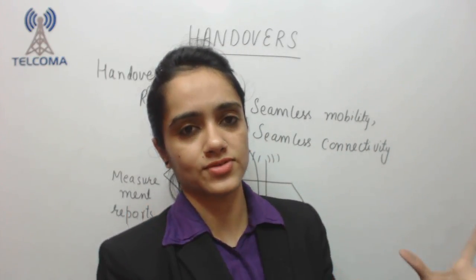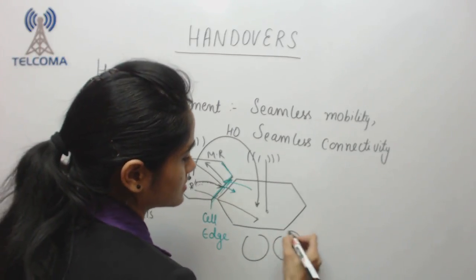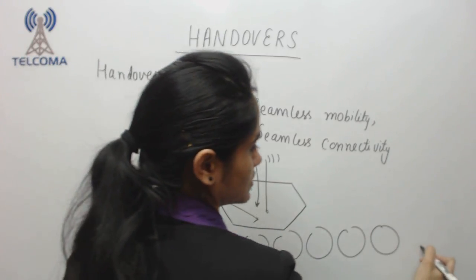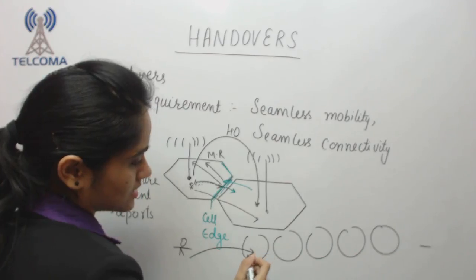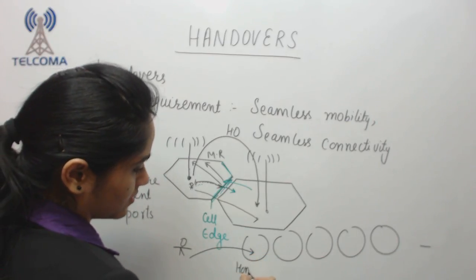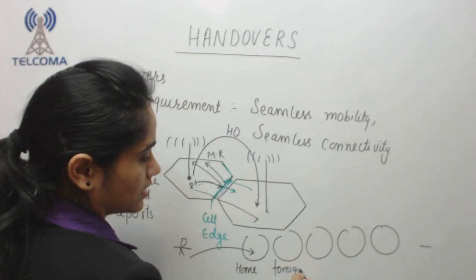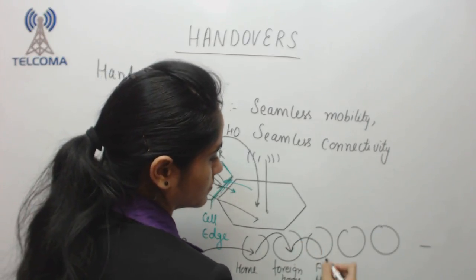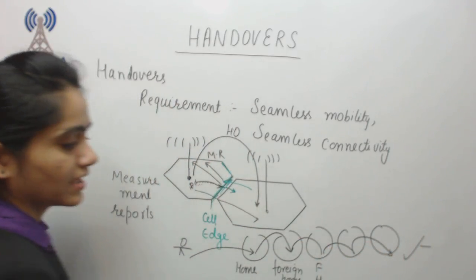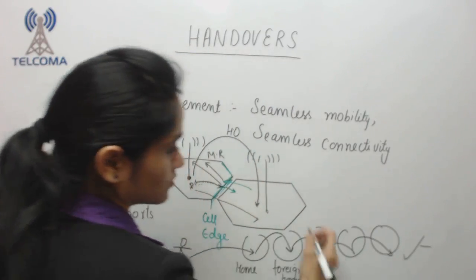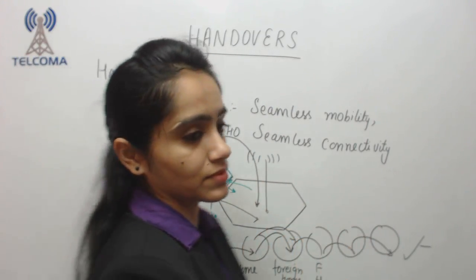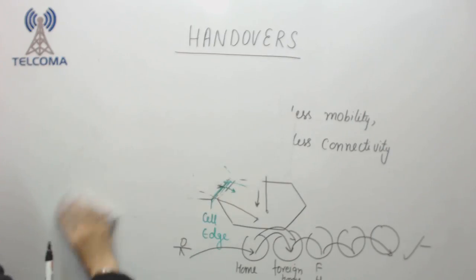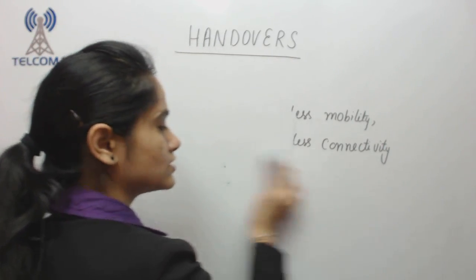If we are moving through an area with multiple cells — cell one, cell two, cell three, cell four, cell five — the user starts a call in the home cell and must reach a distant point. As it moves, each cell becomes the home cell in turn, and the next is the foreign cell. After passing through a number of cells, each one grants a handover, which is the complete handover process.